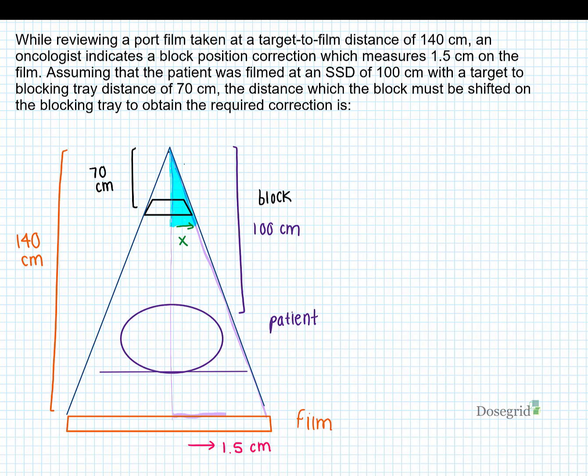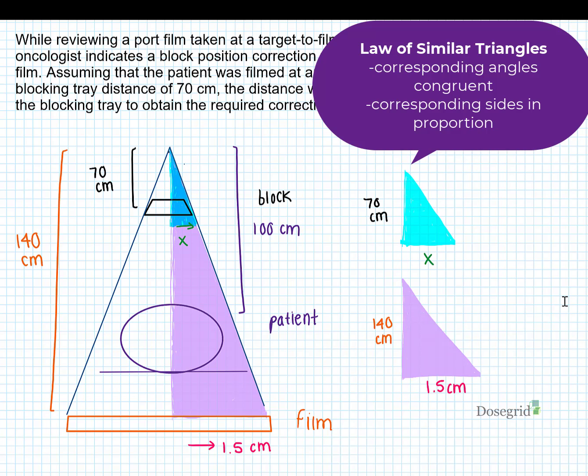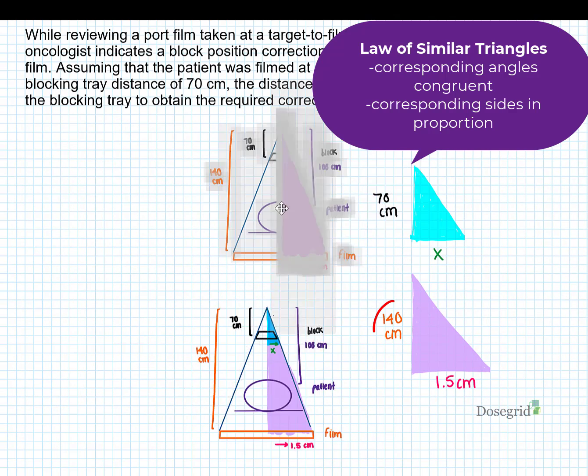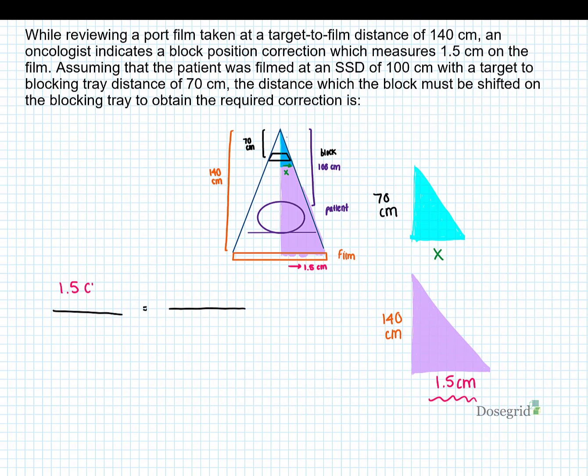Using simple geometry, you can set up a ratio to find your answer. The law of similar triangles applies here—this side is proportional to this side, and this side is proportional to this side. You can set up a ratio, write out your proportion, and solving it out you get 0.75 cm for your answer.